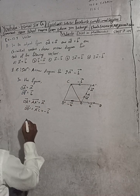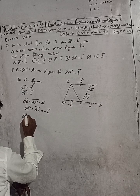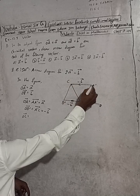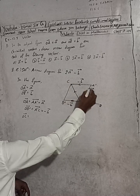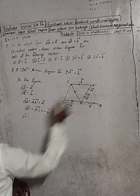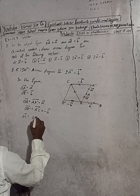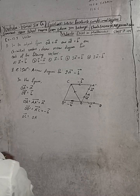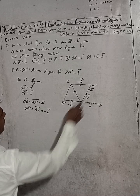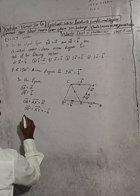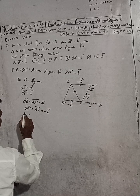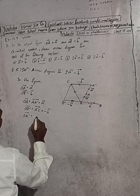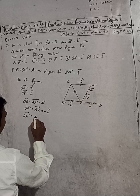Now we can write OC vector. OC vector — since there is 2a vector, we move this way. OC is called OA dash vector. So I will do one more step: we need OA dash. OA dash vector is a vector plus a vector, that is 2a vector. Now we can write OA vector plus AA dash vector.